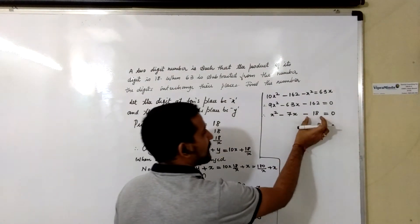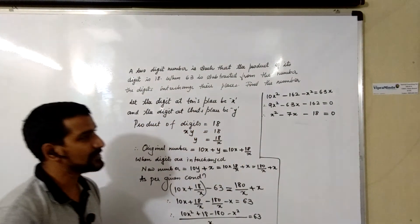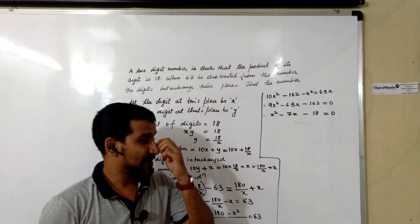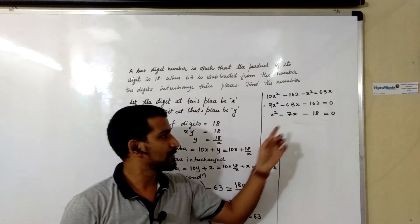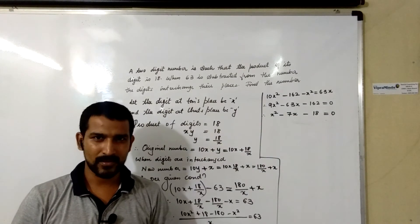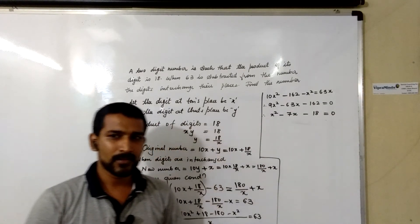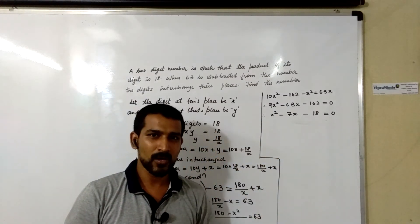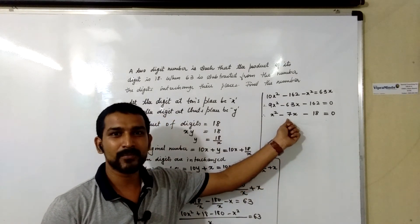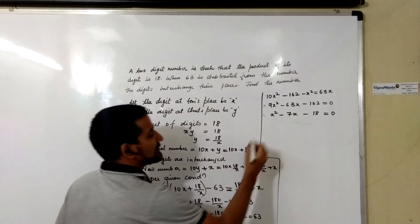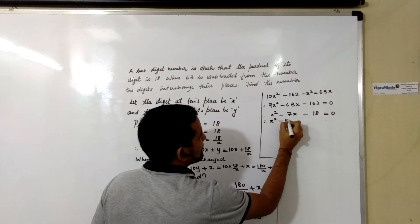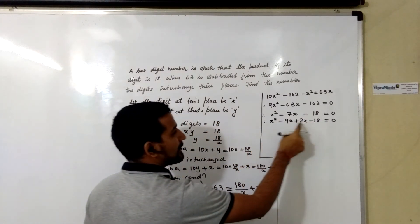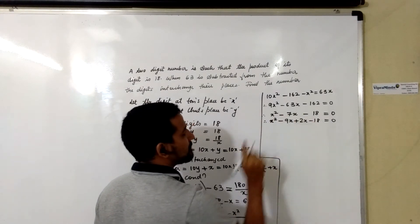We need two numbers whose product is −18 and whose sum is −7. Checking: 2 × 9 = 18, and −9 + 2 = −7. So the factors are (X − 9)(X + 2) = 0, which expands to X² − 9X + 2X − 18 = 0. Indeed, −9 × 2 = −18 and −9 + 2 = −7.